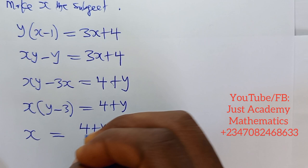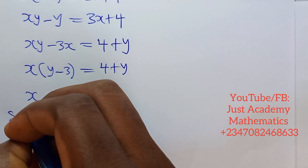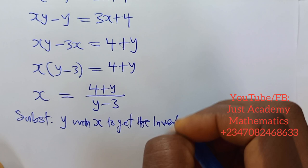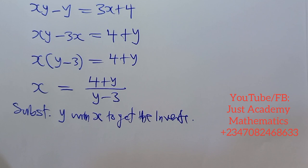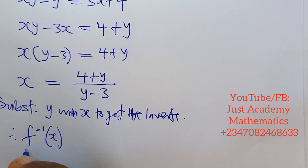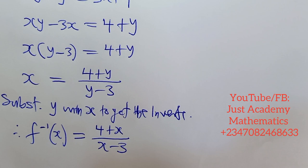Now to get the inverse, we substitute y with x. To get the inverse, we replace y with x. Therefore f inverse of x is equals to (4+x)/(x-3). We have gotten the inverse of x.